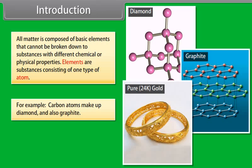For example, carbon atoms make up diamond and also graphite. Pure 24 karat gold is composed of only one type of atom, gold atoms.